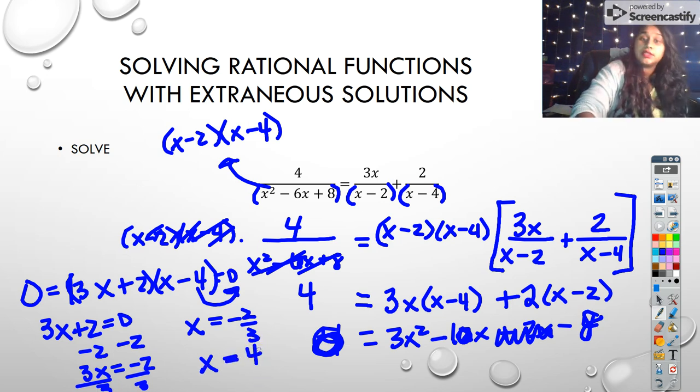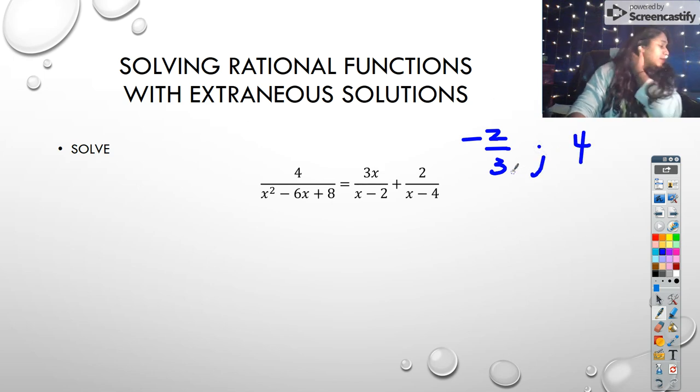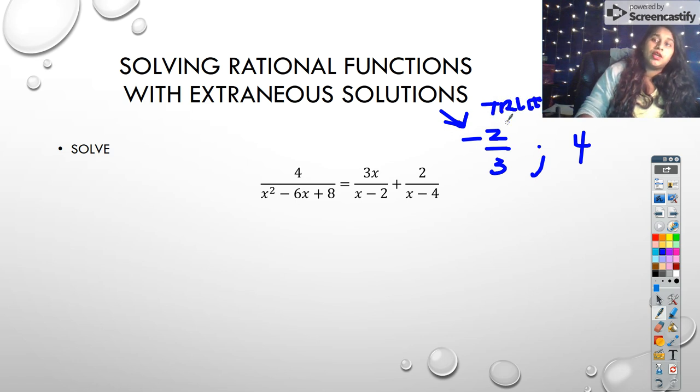But we're not entirely done. We have to plug in those values. So let me rewrite those up here. Negative 2 thirds and positive 4. So when I plug in these values, I'm going to see if there's an extraneous solution. In order to save time, we're going to pretend I already plugged in negative 2 thirds and got a true statement. So that means we know that this one works. But to prove to you extraneous solutions exist, I am going to plug in the 4.